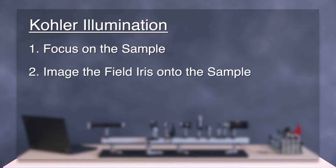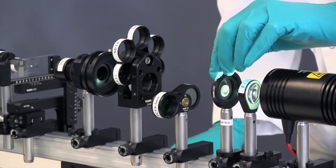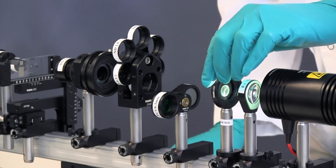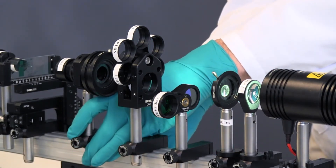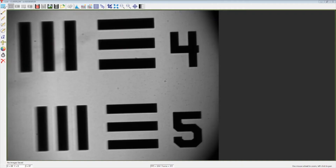The second step is to image the field iris onto the sample. Close the field iris down until the image is almost dark. Then translate the condenser back and forth until you can see the field iris in the image. Be sure the field iris is centered in the image vertically, and adjust the height if needed. Rotate the condenser until the field iris is centered horizontally, then move the condenser back and forth again until the field iris is in focus.